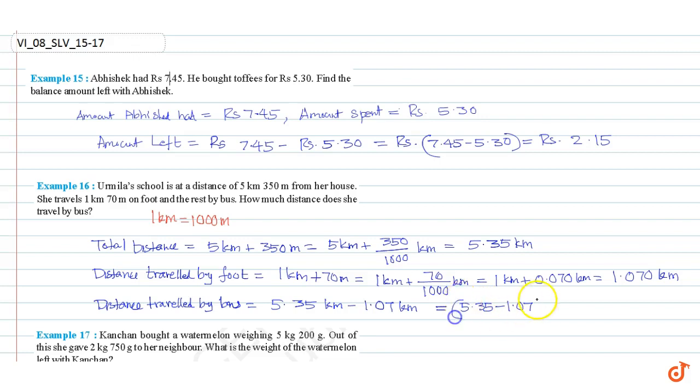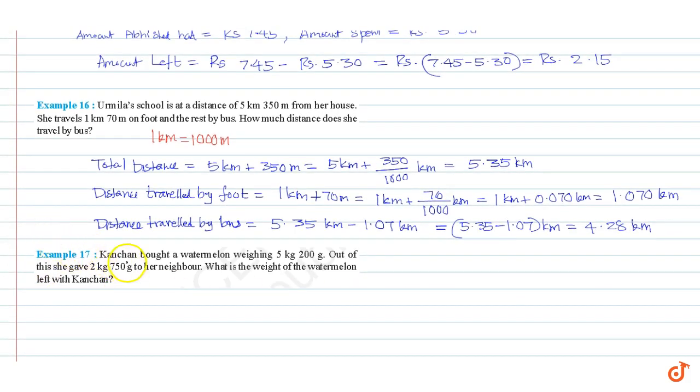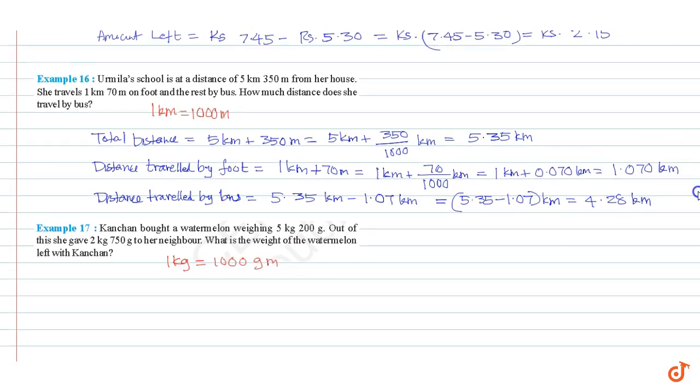Example 17. Kanchan bought a watermelon weighing 5 kg 200 grams. Out of this, she gave 2 kg 750 grams to her neighbor. What is the weight of the watermelon left with Kanchan? You know that 1 kg equal to 1000 grams.